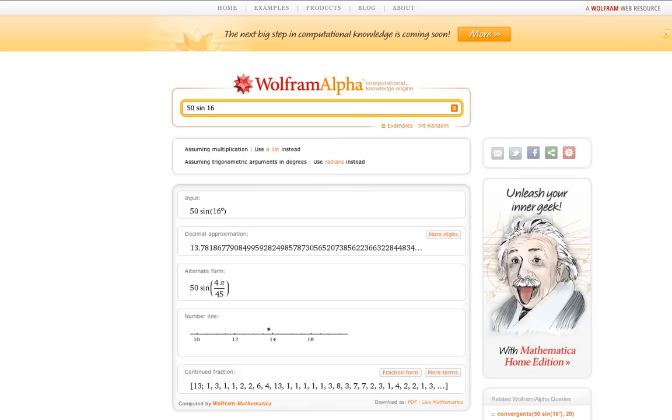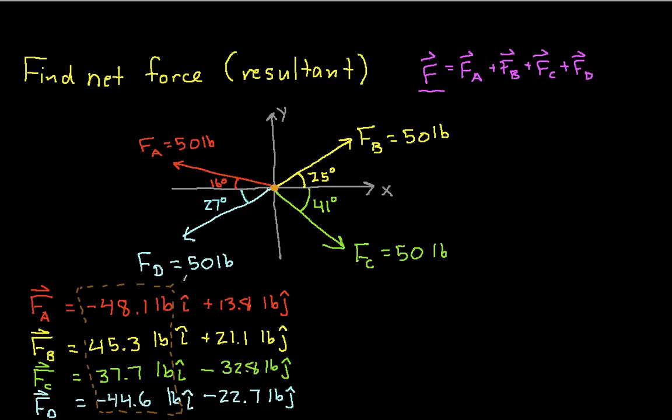So let's do that. So we have then minus 48.1 plus 45.3 plus 37.7 minus 44.6. And that gives us negative 9.7. So these guys sum to negative 9.7 pounds.